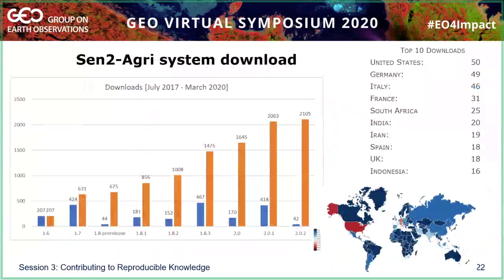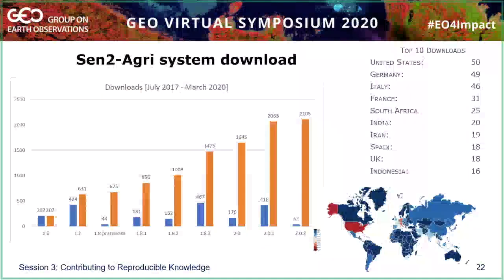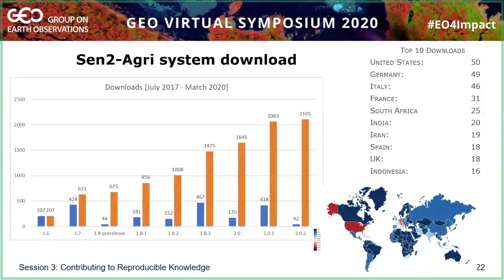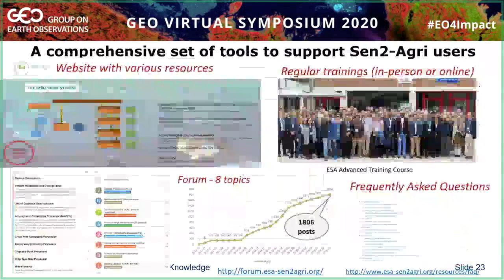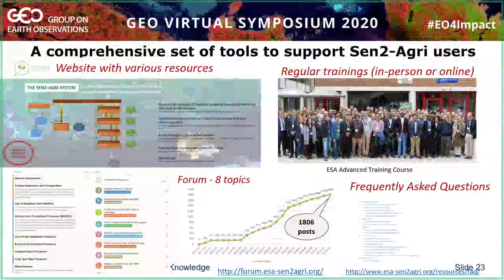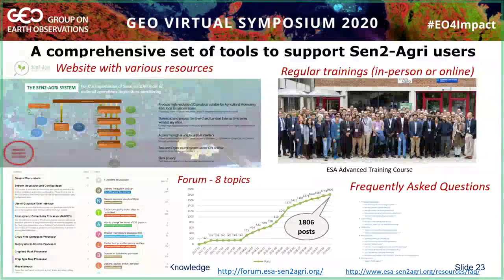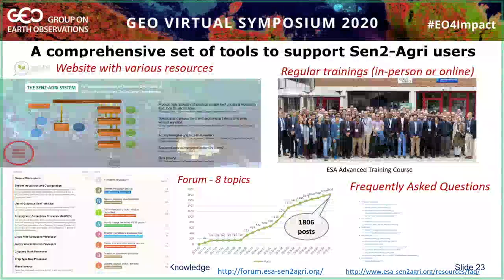Some statistics now about this user community — here you can see the downloads of the Sent2Agri system are growing, and the versions of the Sent2Agri system have also evolved. The first version released at the end of the project was version 1.7, and since 2017 we have made evolutions of the system based on feedback received from users. To support this user community, we provide a comprehensive set of tools: a website with a section of frequently asked questions, a very active forum, and we try to organize regular trainings — in-person or online trainings upon request.